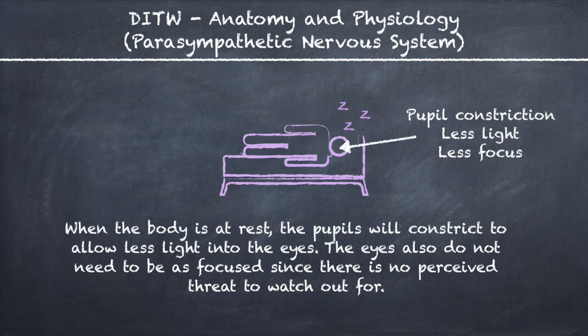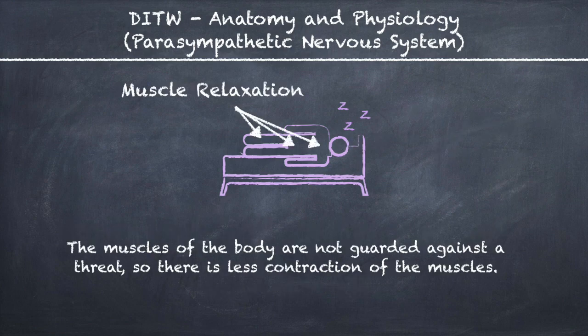When the body is at rest, the pupils will constrict to allow less light into the eyes. The eyes also do not need to be as focused since there is no perceived threat to watch out for. The muscles of the body are not guarded against a threat, so there is less contraction of the muscles.